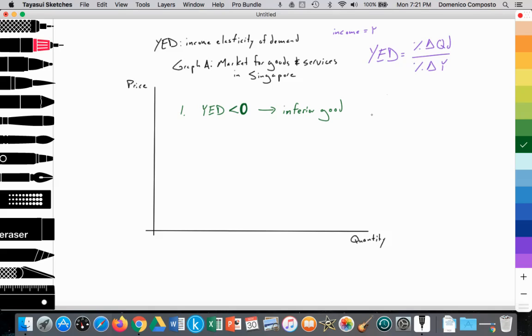So let's say that YED equals negative two. We want to remember it's negative two over one using this formula. For example, if income were to rise by 1%, and we see the quantity of demand decreasing by 2%, that must mean that it's an inferior good.